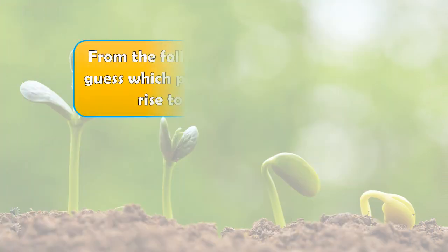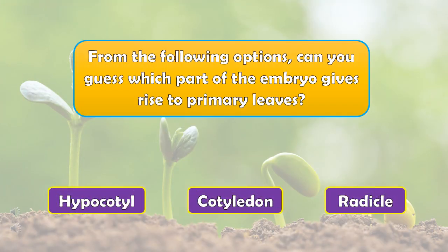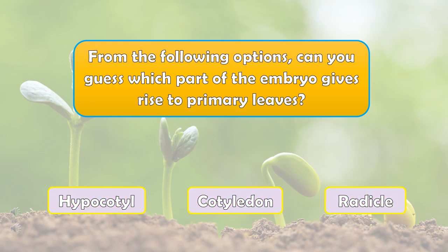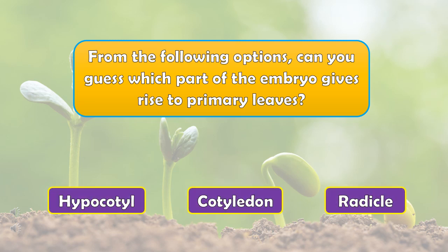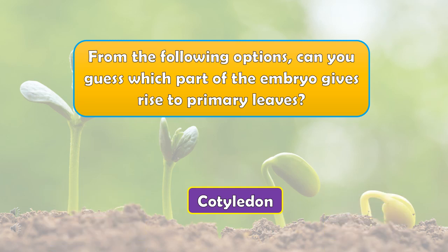From the following options, can you guess which part of the embryo gives rise to primary leaves? The right answer is cotyledon.